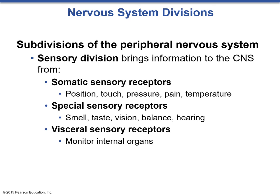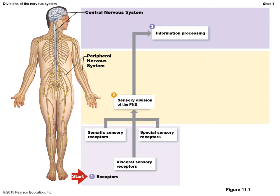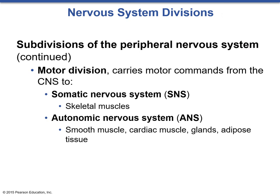The breakdown division of the peripheral nervous system can be seen in a flowchart. Somatic, visceral, and special sensory information is transmitted via the sensory division of the peripheral nervous system to the central nervous system — the brain and spinal cord — for processing. Once processed, the brain and spinal cord issue motor commands via the motor division of the peripheral nervous system to either the somatic nervous system or the autonomic nervous system.